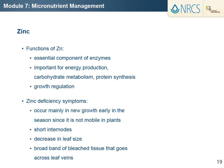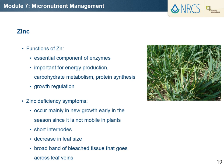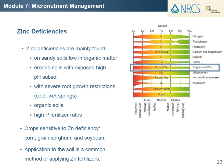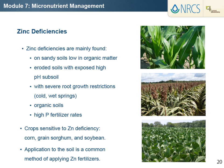Zinc is an essential component of enzymes important for energy production, carbohydrate metabolism, protein synthesis, and growth regulation. Zinc is not mobile in plants, so zinc deficiency symptoms occur mainly in new growth early in the season. The most visible zinc deficiency symptoms are short internodes, a decrease in leaf size, and a broad band of bleached tissue that goes across leaf veins. Zinc deficiencies are mainly found on sandy soils low in organic matter, eroded soils with exposed high pH subsoil greater than 7.3, severe root growth restrictions, and organic soils. Crops sensitive to zinc deficiency include corn, grain sorghum, and soybean.